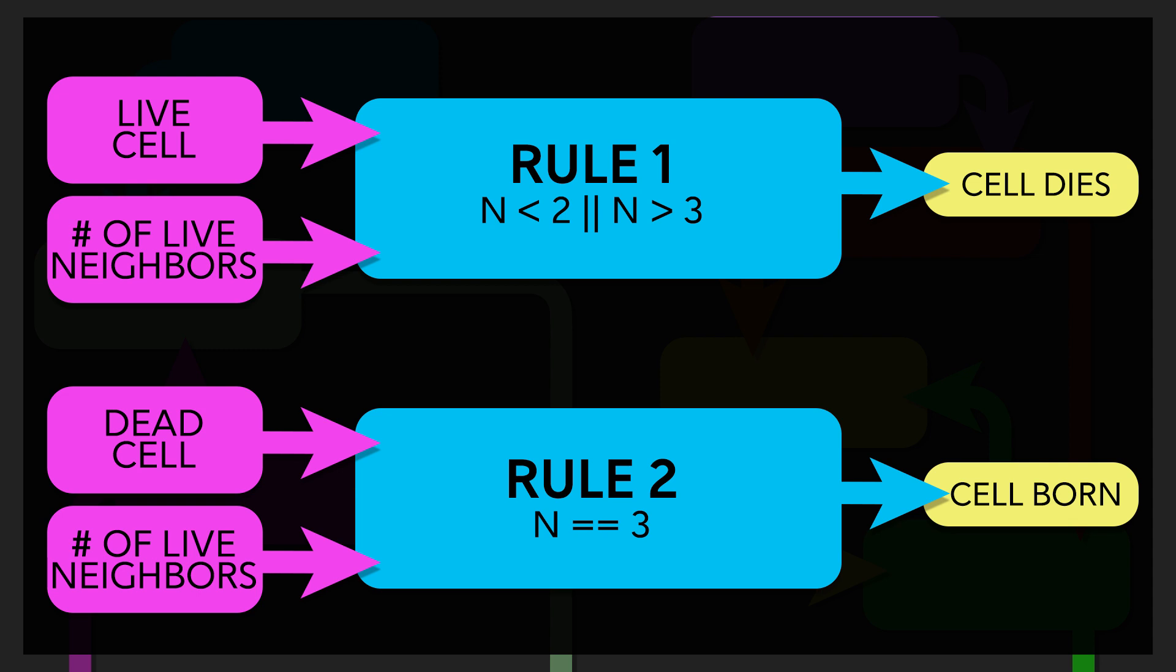For a dead cell, the second system, if there are exactly three live neighbors, the cell comes to life.